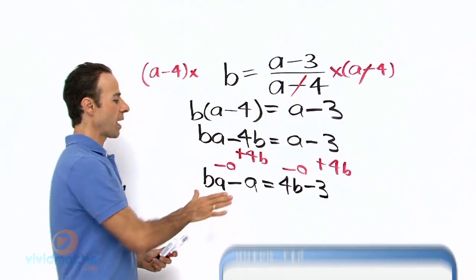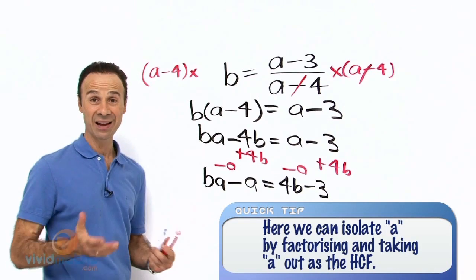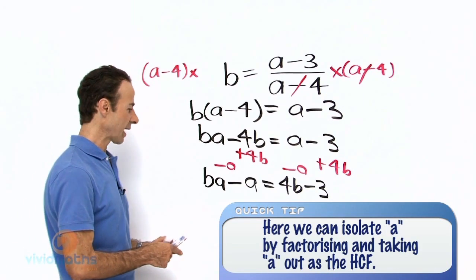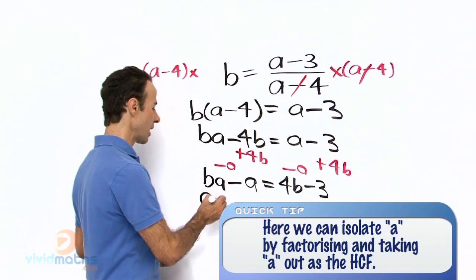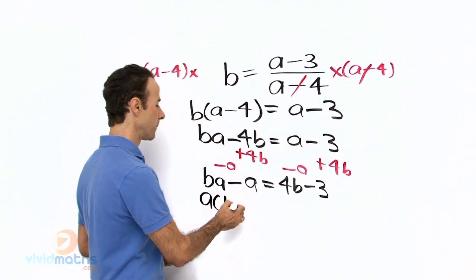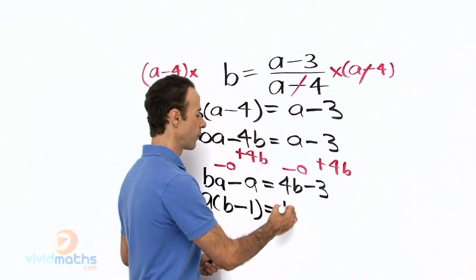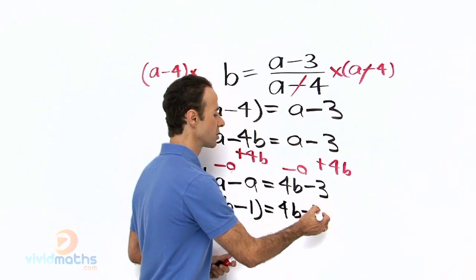Let us factor on the left-hand side here so we can make A the subject and we can take A out. So it is A bracket B minus 1 equals 4B minus 3.